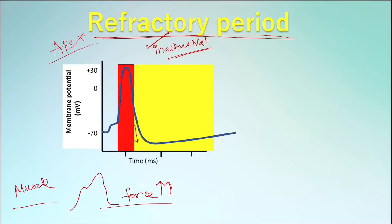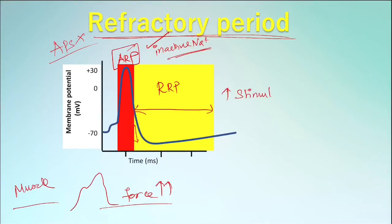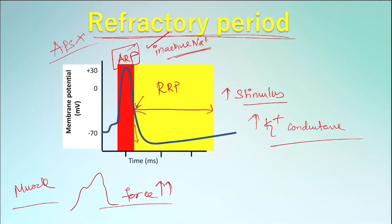So it is not possible to elicit a second action potential. The refractory period is divided into the absolute refractory period, where a second action potential is impossible, and the relative refractory period, where a second action potential might be elicited when a higher stimulus strength is given. This is because there are enough sodium channels in the closed state during the relative refractory period, but there is a hyperpolarizing current due to high potassium permeability which opposes depolarization.